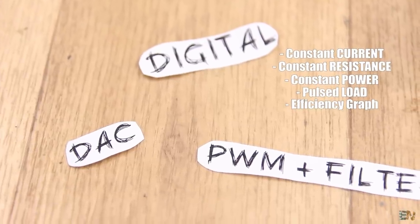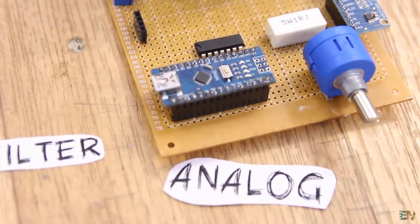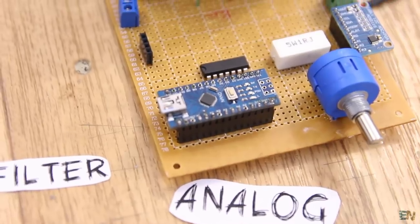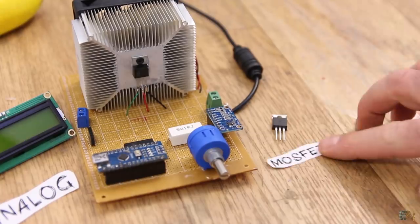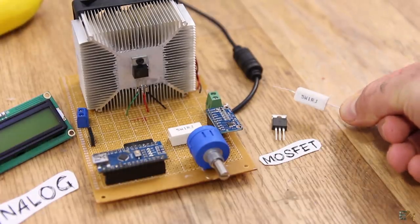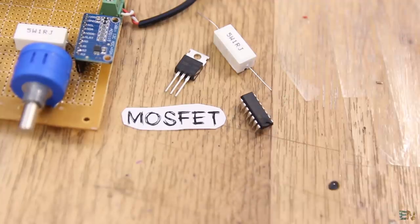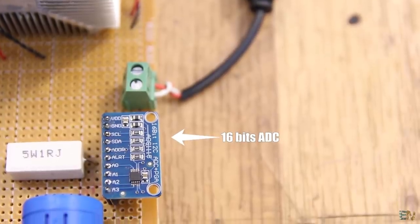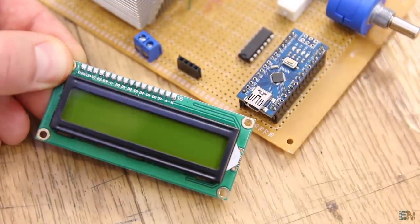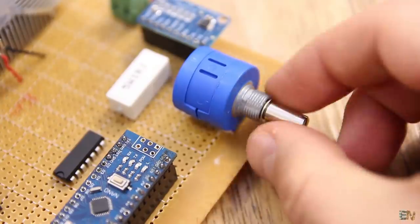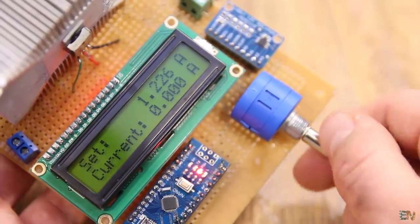But since I haven't received all the modules yet, such as the DACs or other sensors, I can't make the digital version yet. Today we'll see a very simple constant load controller. To control the amount of current passing through the load, we'll use a MOSFET, a high power resistor of 1 ohm, and an operational amplifier. To read the values I'll use a 16-bit ADC and the Arduino, and to print the values I'll use a common LCD like this one. To set the values I'll use a 10-turn potentiometer like this one here, and using this we can get a precision of 0.001 milliamps.